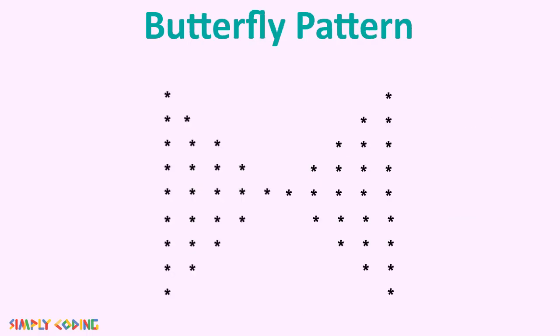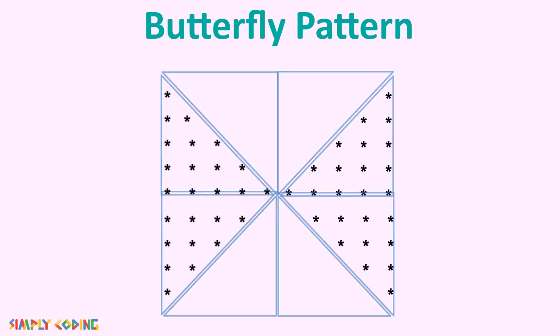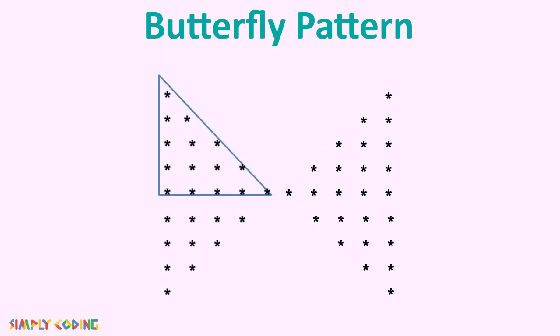If we see the butterfly pattern, we have 8 triangles here. On the top, we have an increasing triangle of stars followed by two decreasing triangles of space, then we have another increasing triangle for the second wing.